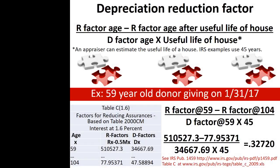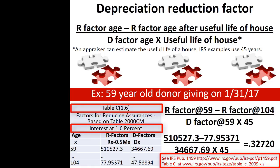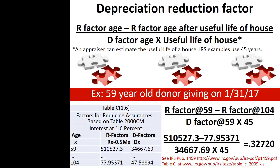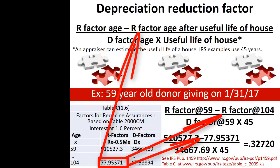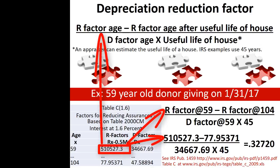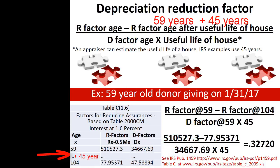Following the IRS example, suppose that the residence will depreciate over 45 years. This, along with the Section 7520 interest rate and the donor's age, is the only information needed to use the IRS tables. Following the instructions of IRS Publication 1459, download Table C and scroll down to the segment titled with Interest at 1.6%, or whatever the appropriate Section 7520 rate is for the date of the transaction. The numerator of the depreciation reduction factor is the R factor at the donor's age minus the R factor at the donor's age after the useful life of the house. In this case, the numerator is the R factor at age 59 minus the R factor at age 104 — that is, age 59 plus the 45-year useful life.